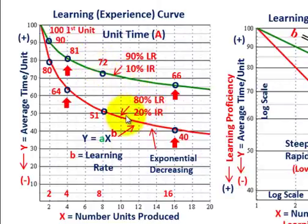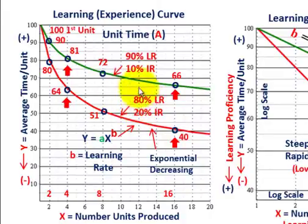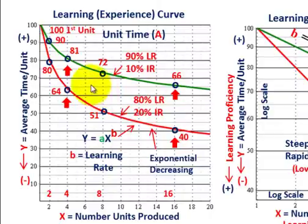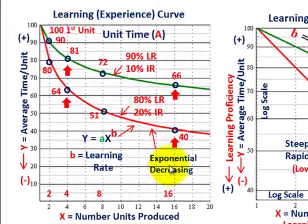The green line above the red line is a 90% learning rate with a 10% improvement rate. Right away you might think 90% sounds better than 80%, but in fact it isn't. With the 80% learning rate, equating to a 20% improvement rate, every time you double your output you reduce your average time per unit by 20%. Both of these curves are exponential decreasing curves, and that's going to be the key with our log-log graph.